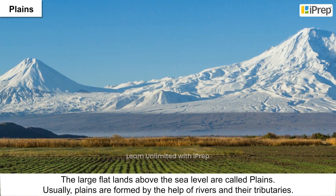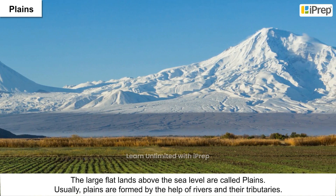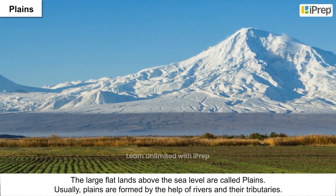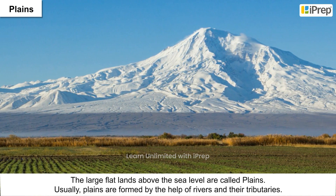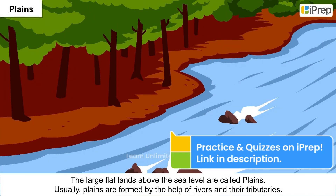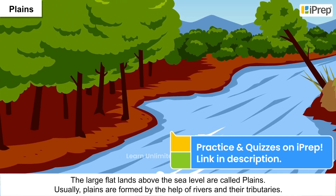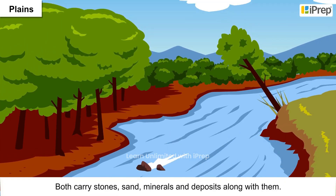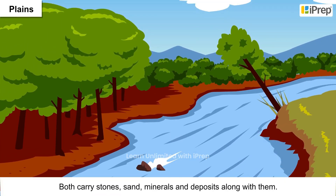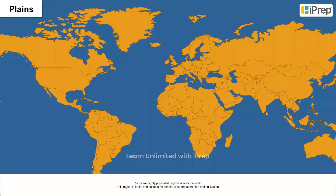The large flatlands above the sea level are called plains. Plains are usually formed by rivers and their tributaries, which carry stones, sand, minerals, and deposits along with them.